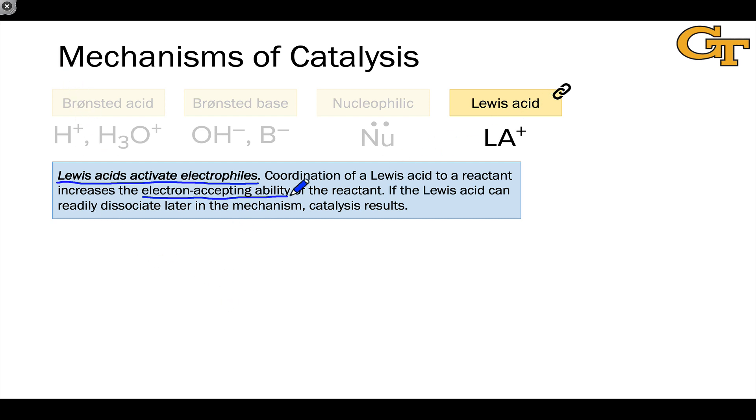One important aspect of Lewis acid catalysis is that the Lewis acid must dissociate from the product in a later step of the mechanism in order to restart the cycle. This is analogous to the proton transfer back to the conjugate base of the Bronsted acid in the Bronsted acid catalysis paradigm.